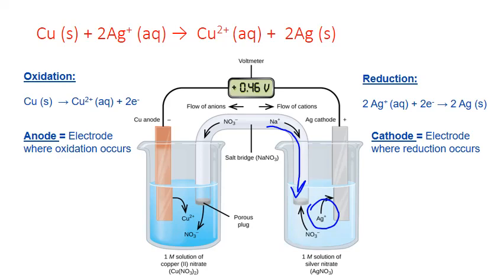The salt bridge is just a tube that contains a concentrated non-reactive salt solution — in this case, sodium nitrate dissolved in water. There are porous plugs at each end of the tube that allow the ions to pass out of the bridge into the half cell solutions and complete the circuit between the two cells.